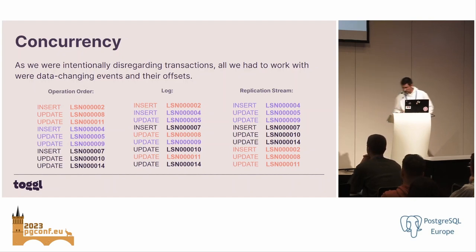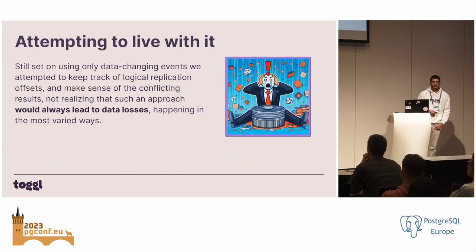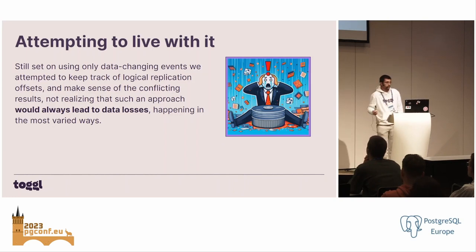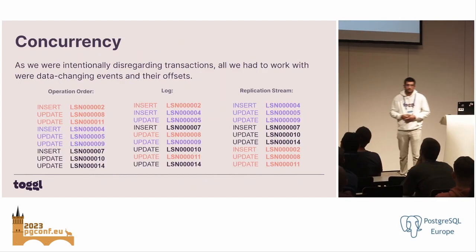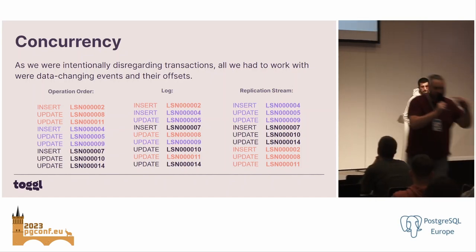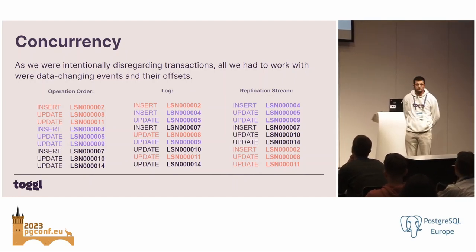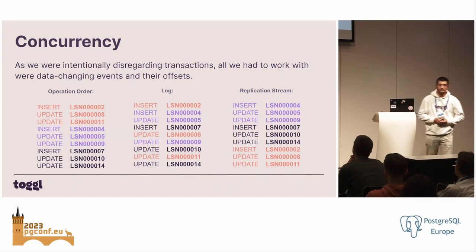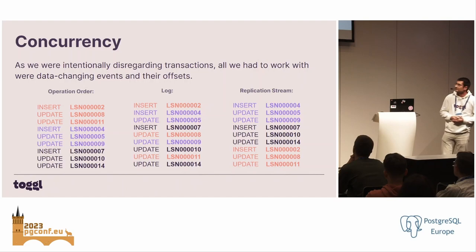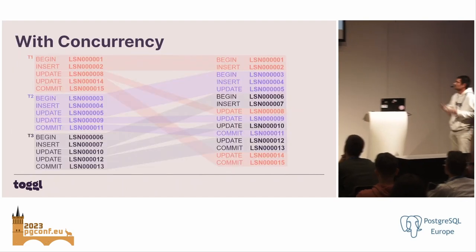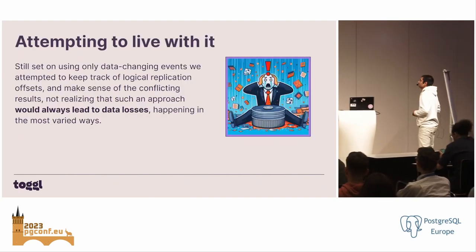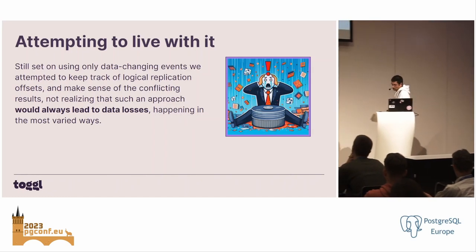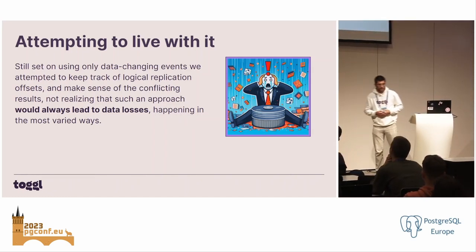As we were caring only for data-changing events, all we had to work with were those events and their offsets. The logical replication stream would stream that data with non-consecutive LSN incrementation within the transaction itself, and in a completely different order. Note again that the first transaction to start is actually the last one to be streamed in logical replication. At this point in our journey, we were still dead set on using only data-changing events — we thought that would simplify our process and didn't realize yet that we would need to change that.